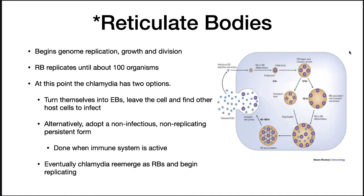The persistent form is adopted when the immune system is active — it is a way of hiding from the immune system, allowing the organism to stay dormant, wait until the immune system calms down again, and then start replicating again. This is why this organism is able to create persistent infections. Eventually the chlamydia will re-emerge as RBs and begin replicating again.